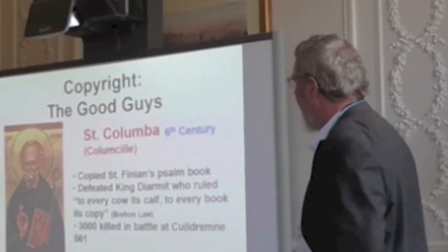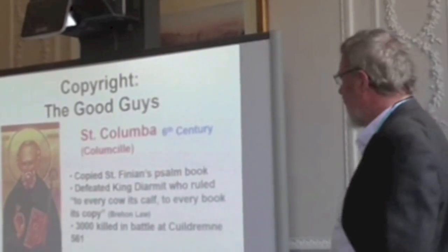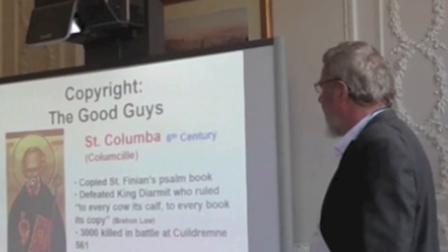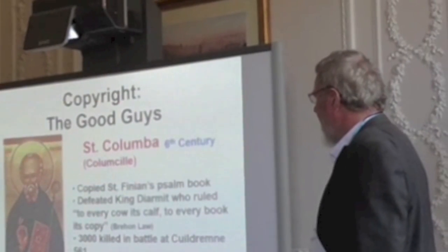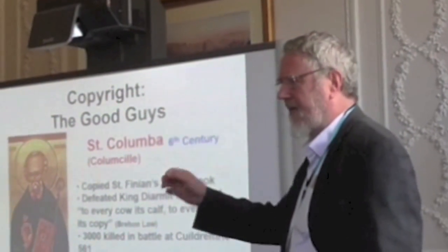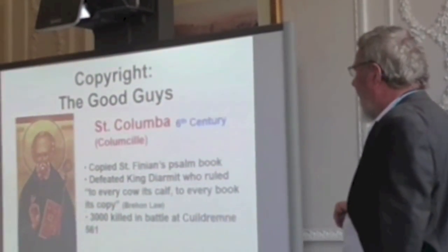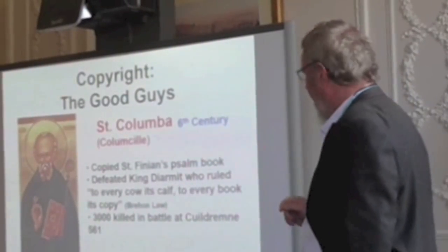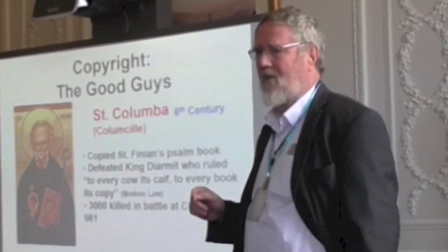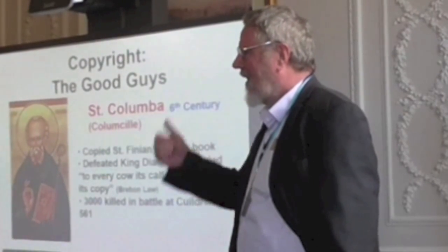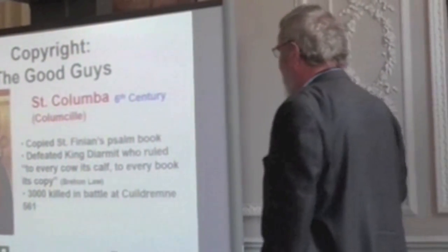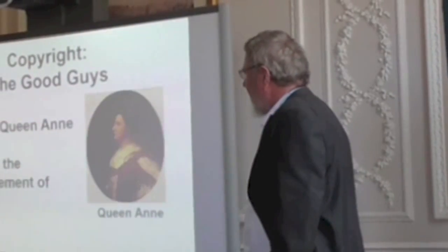The first copyright case came with St. Columba in the 6th century, where he copied St. Finian's psalm book. And the king, Dermot, said: 'To every cow its calf, to every book its copy,' declaring it was illegal for Columba to have copied the psalm book. They got into an altercation, and in County Sligo in Ireland, 3,000 people were killed in a battle over it. St. Columba was exiled to Iona in Scotland — and that's how he ended up in Scotland.